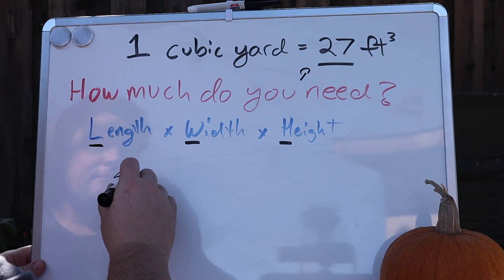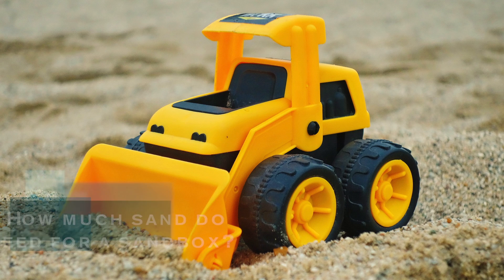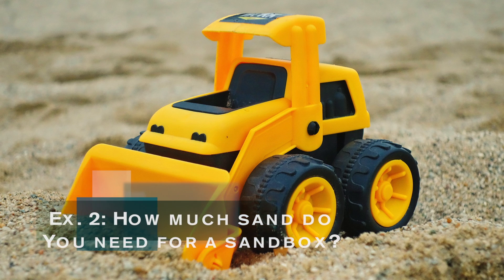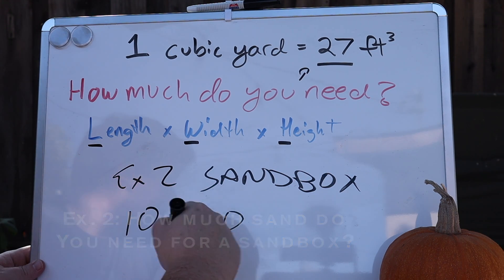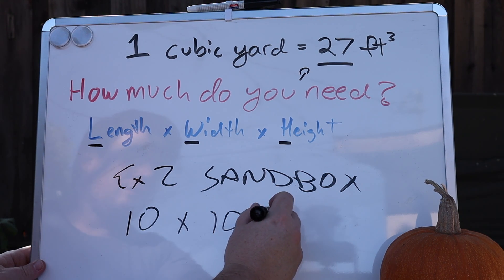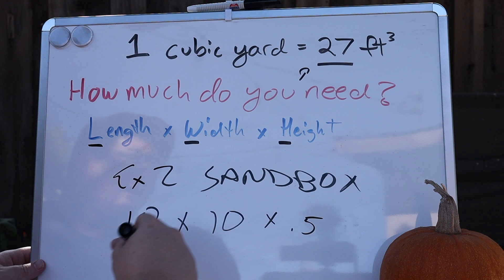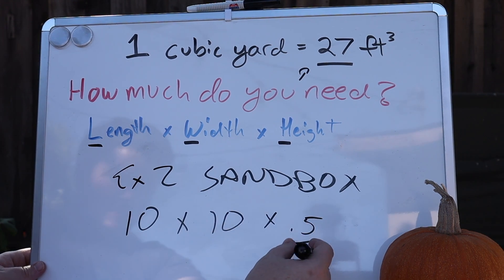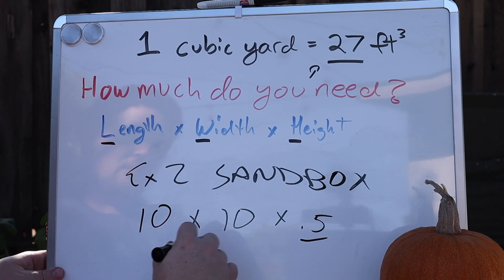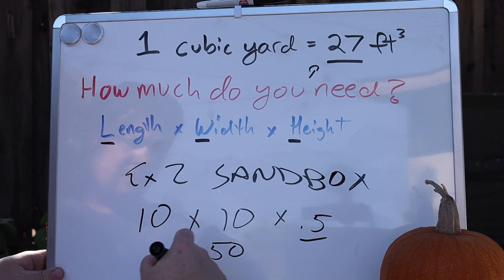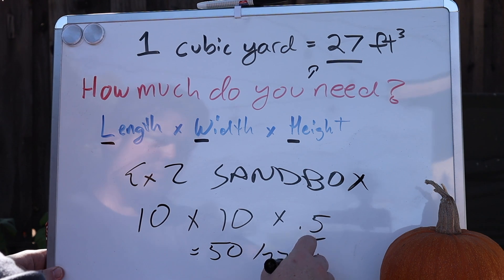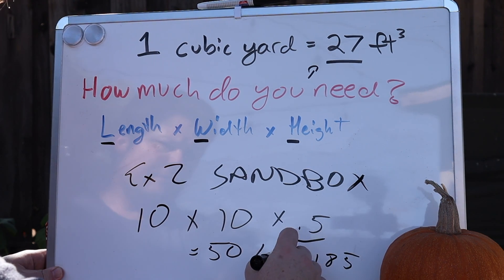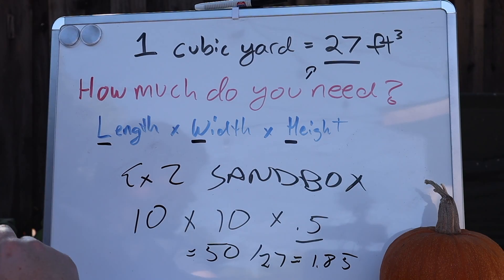Example two: we're going to create a sandbox. The sandbox will be 10 feet by 10 feet and six inches deep — that's one half of a foot. You can see pretty easily this gives you 50 cubic feet, and dividing that by 27 you end up with 1.85 cubic yards — just under two.